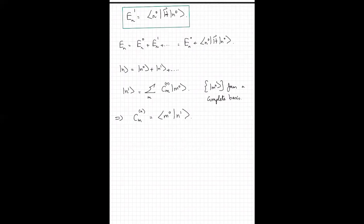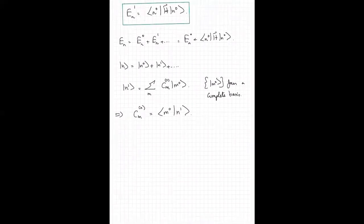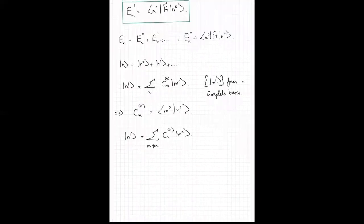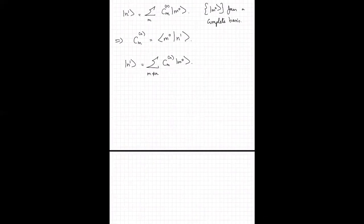Basically, the problem of calculating the first-order corrections to the eigenkets boils down to calculating these expansion coefficients. In this expansion, I can write it by taking out the ket that is parallel to |n⟩ — in other words, sum only over m not equal to n. Let me give a concrete example to make this clear: a three-state system.